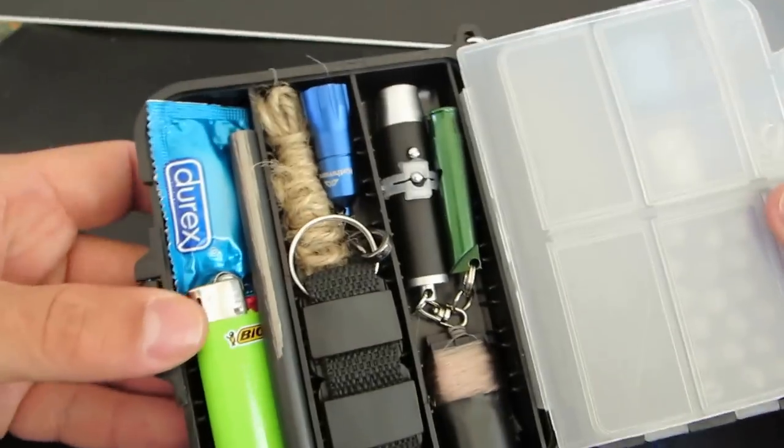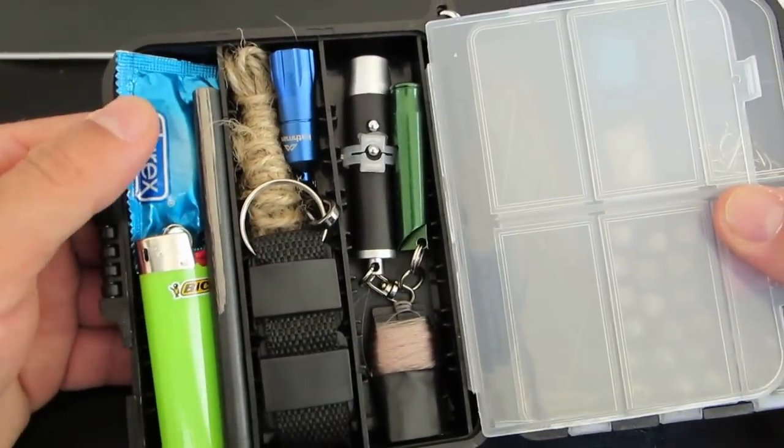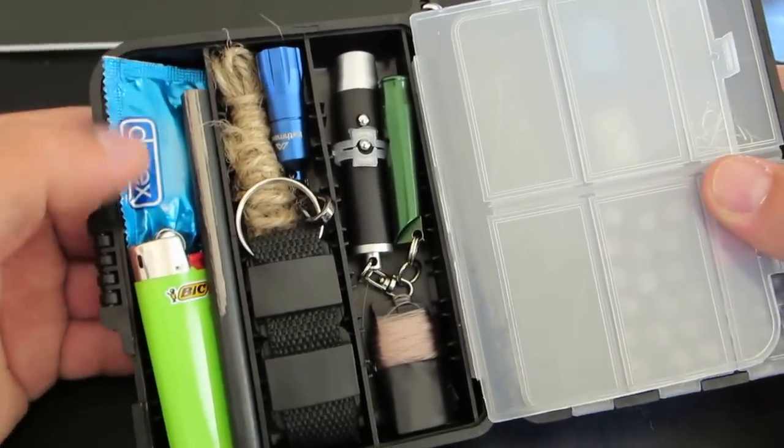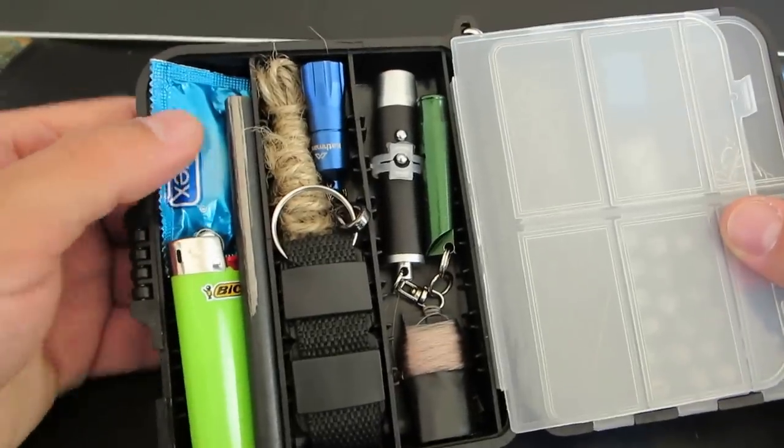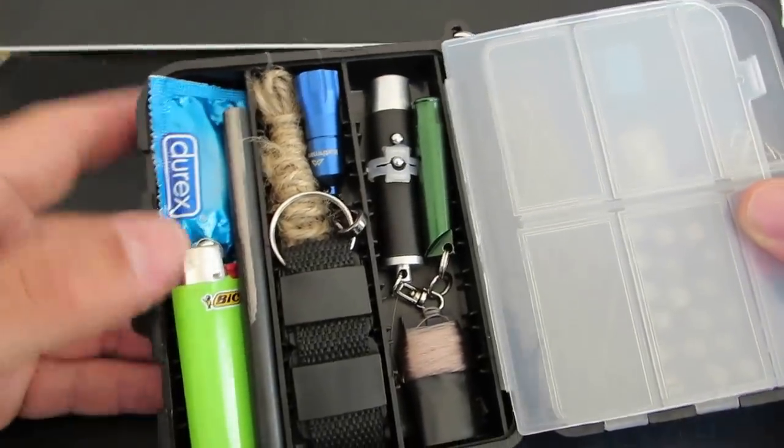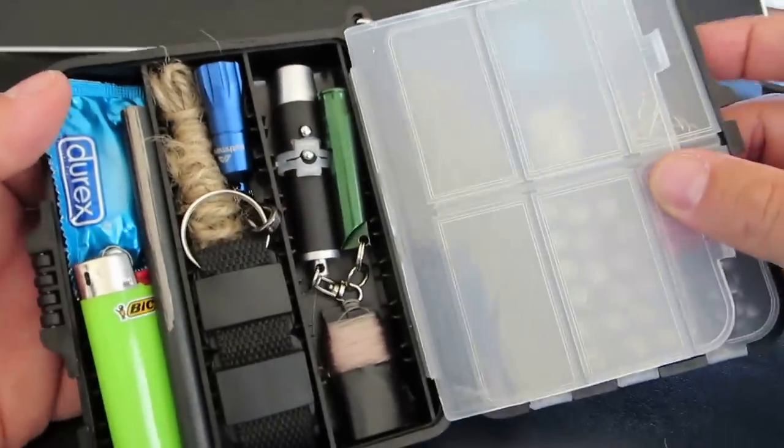I think what's probably missing from this, to be fair, is maybe some chlorinated tablets or some iodine tablets for water purification. And I think you'd probably find room to fit that into the system.